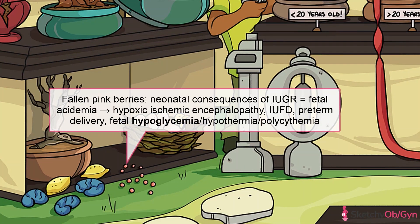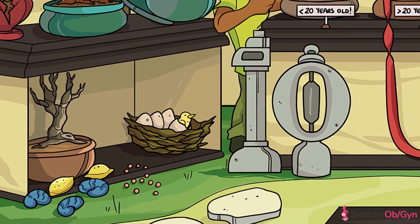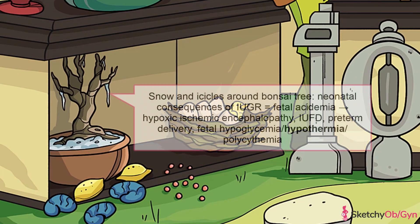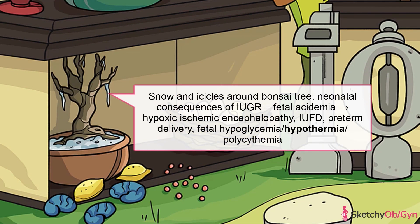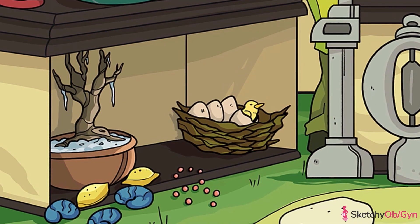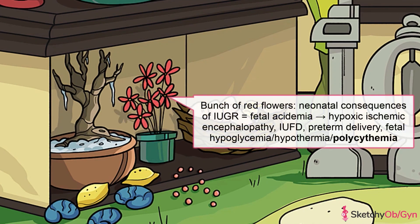Hypoglycemia, symbolized by these fallen pink berries, is another common finding in growth-restricted babies, likely due to diminished glucose reserves. Many of these small babies also have difficulty regulating their temperature, putting them at increased risk for hypothermia — we've put icicles on this bonsai tree to remind you of this. Another consequence of IUGR is fetal polycythemia, an increased amount of red blood cells. The chronic underperfusion causes an increase in erythropoietin, which releases more RBCs, represented by this bunch of red flowers.